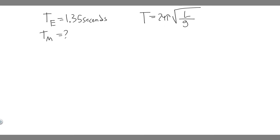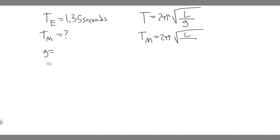Think about how we want to solve this problem. T on Mars is going to be 2π times the square root of the length divided by G_Mars. Gravity on Earth is 9.8 m/s², and for Mars it's going to be 0.37 multiplied by 9.8, because it's 0.37 that on Earth.